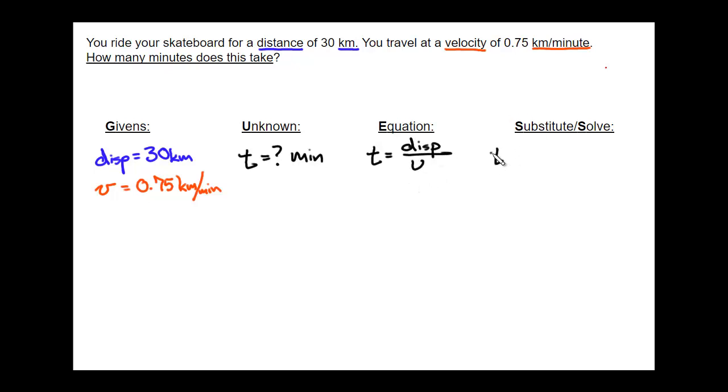So if I substitute displacement, I can put 30 kilometers divided by the velocity, 0.75 kilometers per minute.